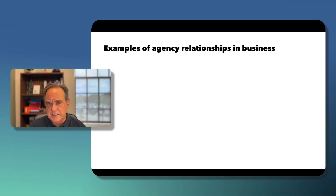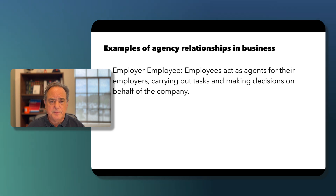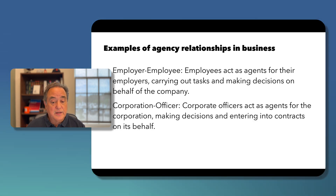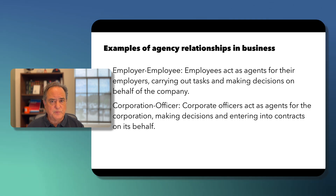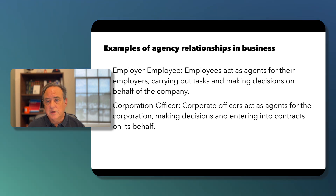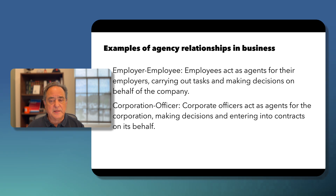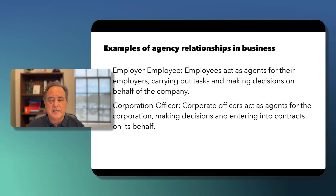Examples of agency relationships in business: first, employer-employee — employees act as agents for their employers, carrying out tasks and making decisions on behalf of the company. Second, corporation and officer — corporate officers act as agents for the corporation, making decisions and entering into contracts on its behalf. In corporate documents, a signature block will identify the person signing, their title such as Vice President, and the principal — for example, James Smith, Vice President, XYZ Corporation — clearly identifying James Smith as an agent of the corporation.